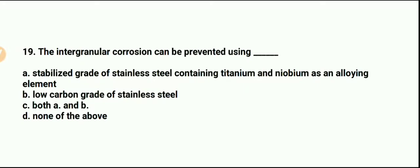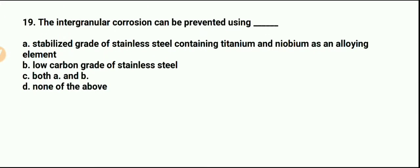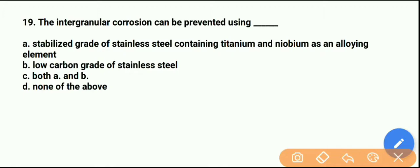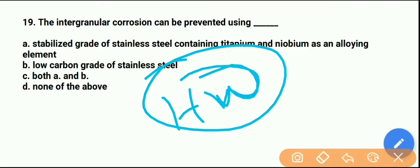Intergranular corrosion can be prevented using stabilised grades of stainless steel containing titanium and niobium as alloying elements, or low carbon grades of stainless steel. Option C — both — is likely the answer. These two questions are given as homework; go to the comment box with your answers.